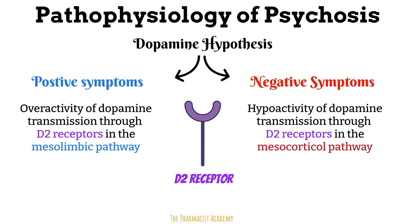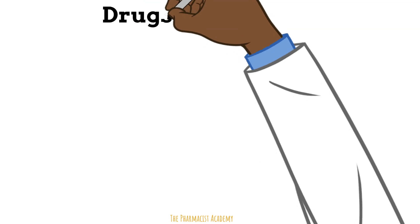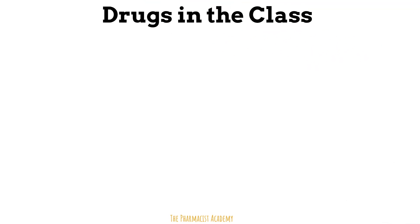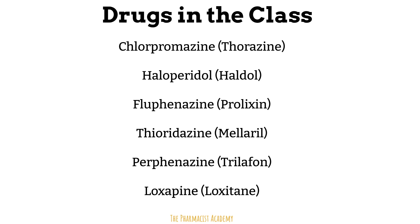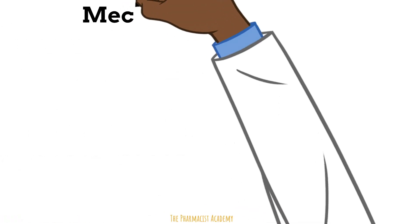These dopamine imbalances can be triggered by a combination of genetics, environmental factors, medications, and other factors. Now let's learn about how the first-generation antipsychotics try to fix this problem. Here are the drugs in the class, with generic names listed first and brand names in parentheses: chlorpromazine, haloperidol, fluphenazine, thioridazine, perphenazine, and loxapine.